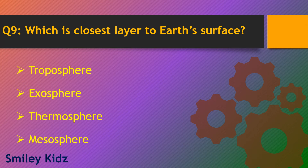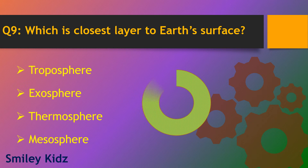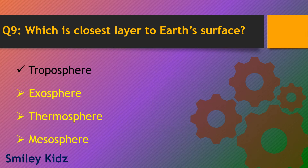Question number 9. Which is the closest layer to earth's surface? Options are troposphere, exosphere, thermosphere and mesosphere. The right answer is troposphere. Troposphere is the closest layer to earth's surface.